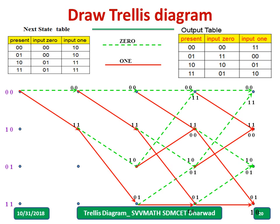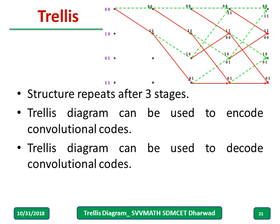This is how to draw a Trellis diagram. If g1 and g2 change, the Trellis shape remains the same for 3-bit constraint length — only the outputs on the branches change. After the third stage, the structure repeats. The Trellis diagram can be used both for encoding and decoding convolutional codes, though it is most useful for decoding.